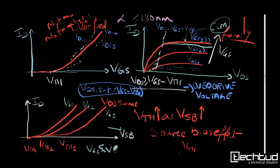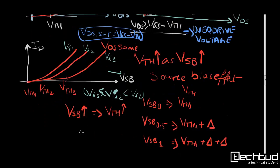We can see here that when VSB is 0, that is body and source are at same potential, the threshold voltage is VTH1. When VSB is 0.5V, then threshold voltage will increase by delta amount. And if VSB increases to V1, threshold voltage will increase substantially.